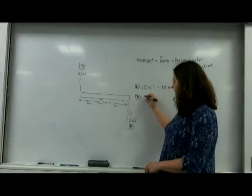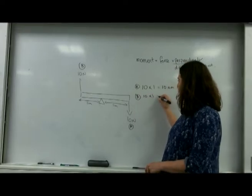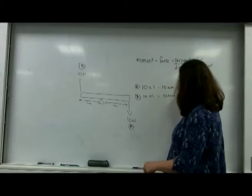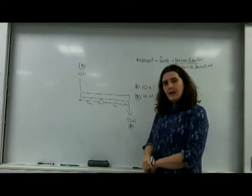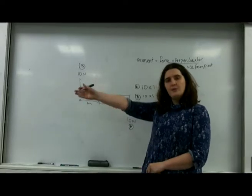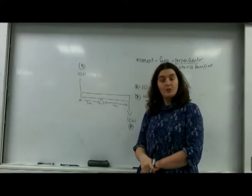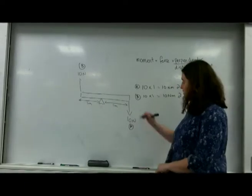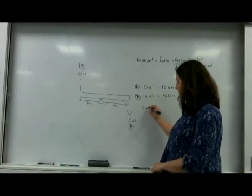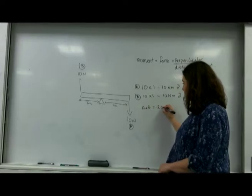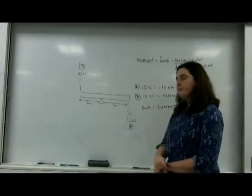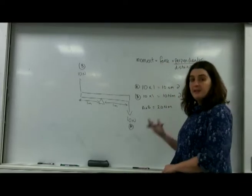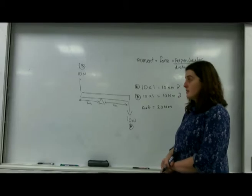Force B is going to be 10 times 1 again, is 10 newtons, but again that is also clockwise. Much like if you had two forces acting in the same direction, you add them together - you do the exact same thing with these. So I'm going to have A plus B, so it's going to be 20 newton metres. Overall this is spinning with 20 newton metres, this couple.